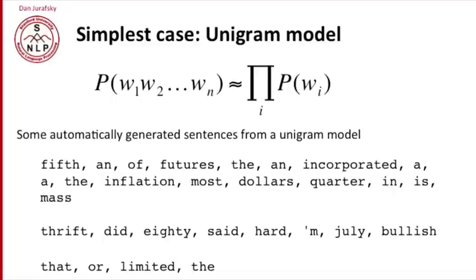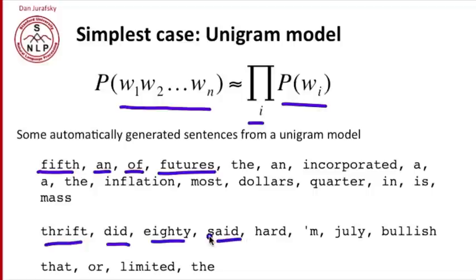The simplest case of a Markov model is called the unigram model. In the unigram model, we simply estimate the probability of a whole sequence of words by the product of probabilities of individual words, unigrams. And if we generated sentences by randomly picking words, you can see that it would look like word salad. So here's some automatically generated sentences generated by Dan Klein. And you can see that with the word fifth, the word and, the word of, this doesn't look like a sentence at all. It's just a random sequence of words. Thrift, did, ad, said. That's the properties of a unigram model. Words are independent in this model.